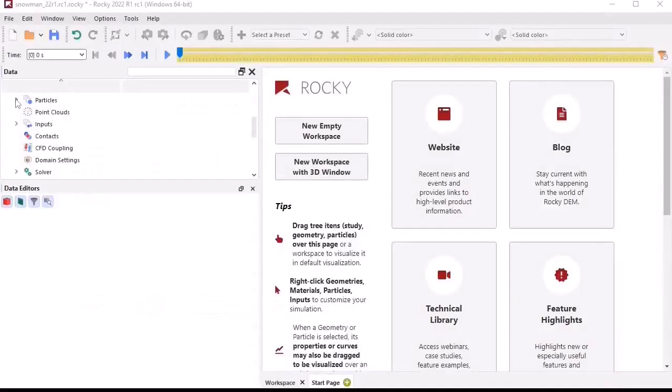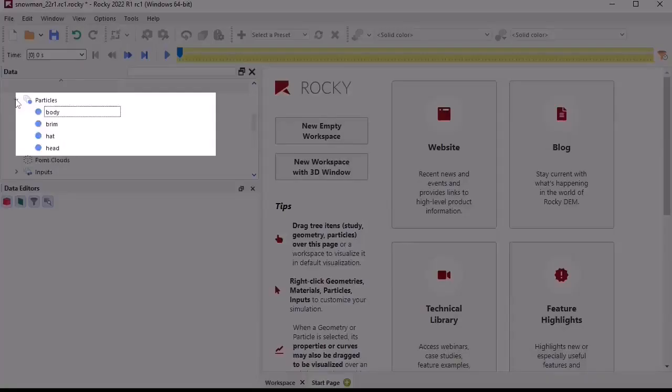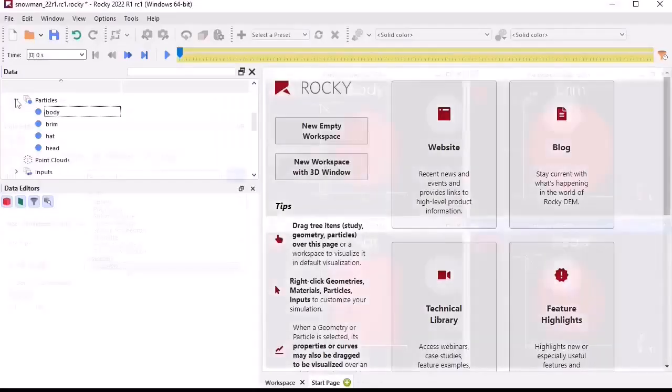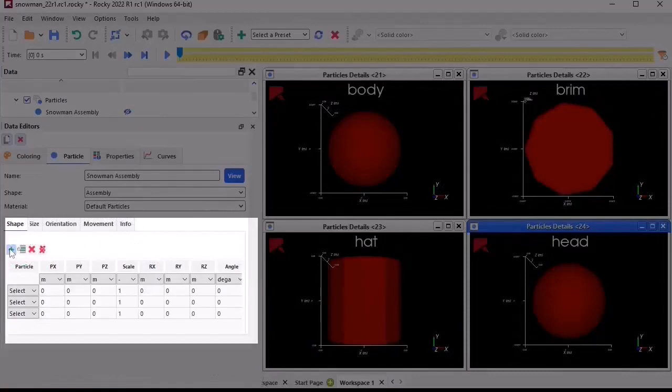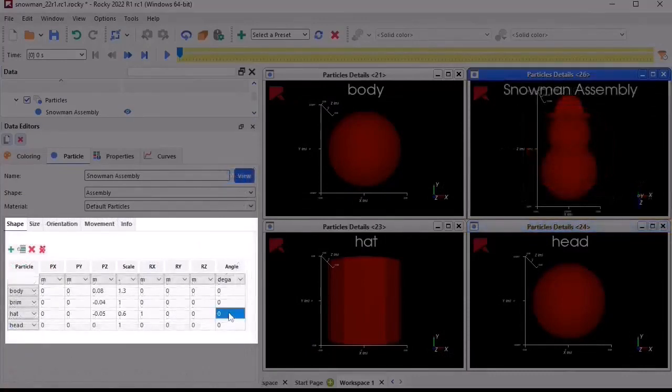An assembly particle is easy to set up. Just create or import the individual part shapes you want to use, create a new assembly shape type, and then define the relative size, rotation, and location of each individual part.